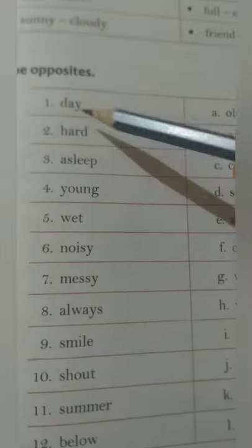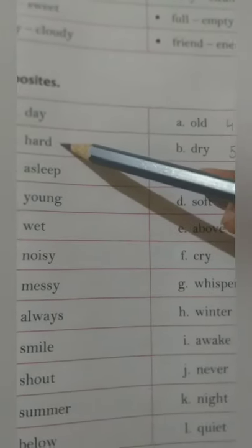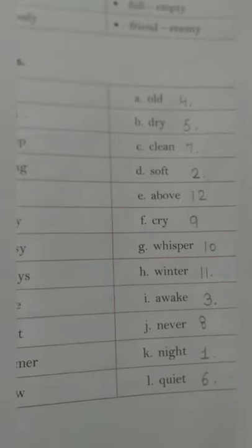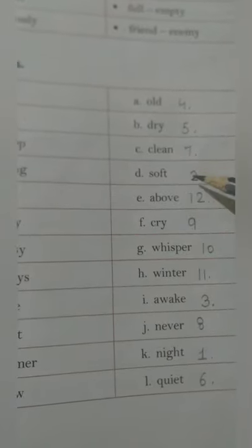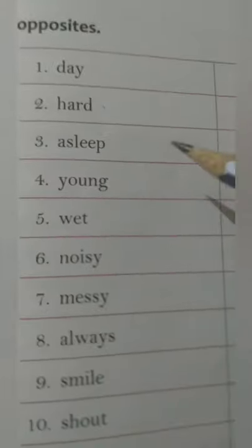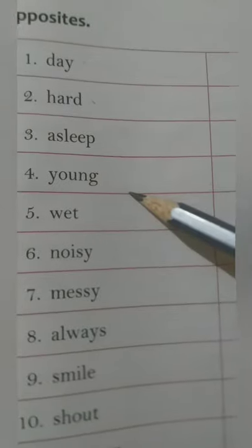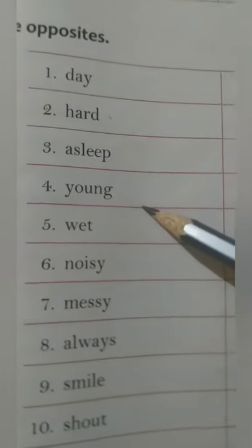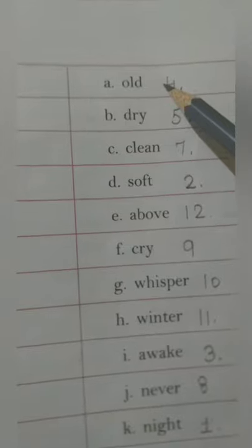Next is hard. Hard ka opposite: soft. Next is asleep. Asleep ka opposite: awake. Fourth number is young. Young ka opposite: old.